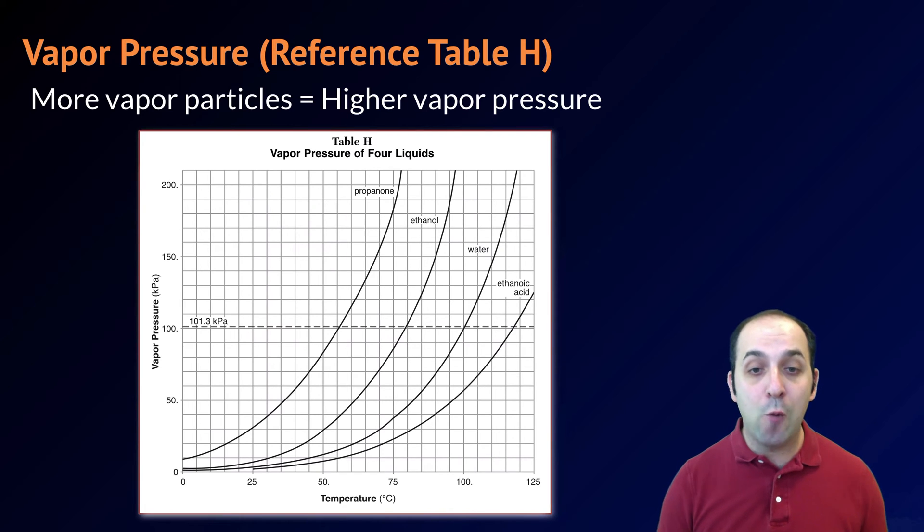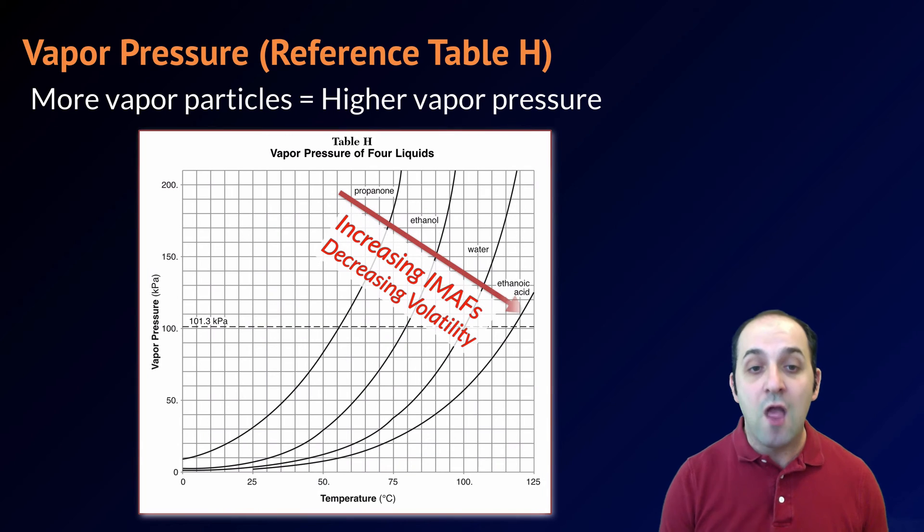So going from propanone through ethanoic acid, we can describe the relationship as follows. The intermolecular attractive forces of the substance are increasing, and so as a result there's a decreased volatility, which leads to a decreased vapor pressure.